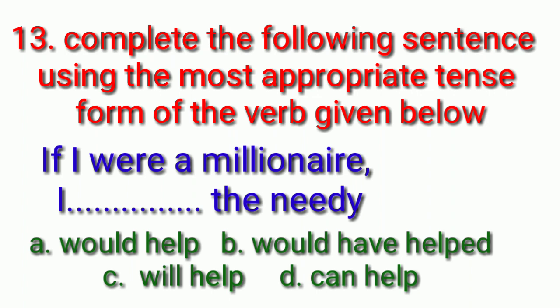Thirteenth one. Complete the following sentence using the most appropriate tense form of the verb given below. So, if I were a millionaire, I dashed the needy. Your options are would help, would have helped, will help, can help. Your countdown starts. And the answer is would help. If I were, past tense, would. Had, would have.